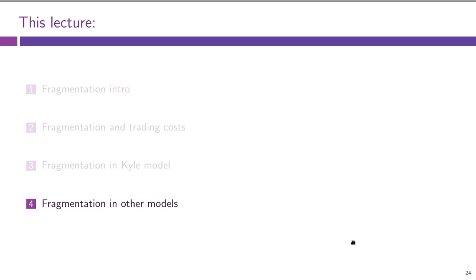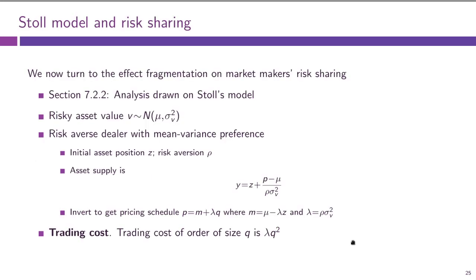We have looked at one model and seen how fragmentation manifests in the Kyle model. Now let us very quickly look at some of the other models from this course and see how fragmentation manifests and affects market outcomes. One model we had was Stoll's model, which explained limited liquidity and depth in the market through the dealer's risk aversion — what we called inventory risk.